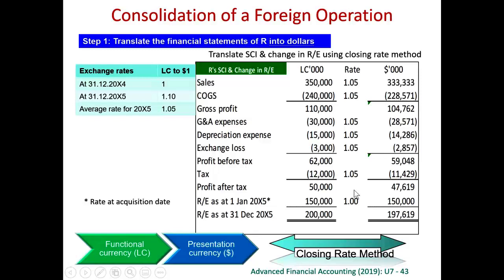After profit after tax, 50,000 divided by 1.05 is 47,619. This is a special year because it is the first year after the day of acquisition. Therefore, the opening retained earnings is the retained earnings at the day of acquisition. At the day of acquisition, the exchange rate was 1 to 1, so 150,000 divided by 1 is $150,000. Retained earnings is an accumulated figure, so we should accumulate it year by year using different exchange rates.